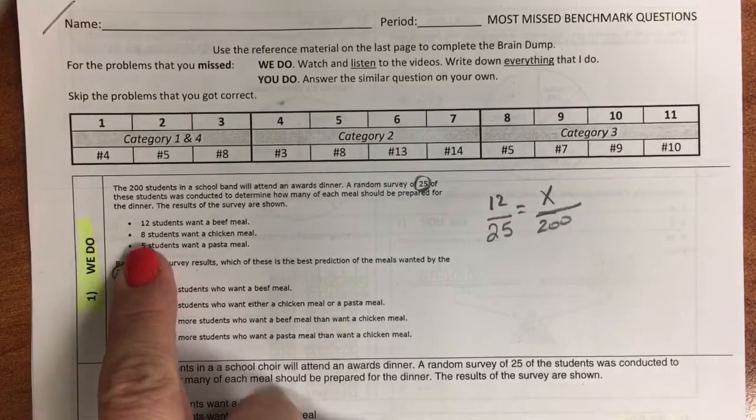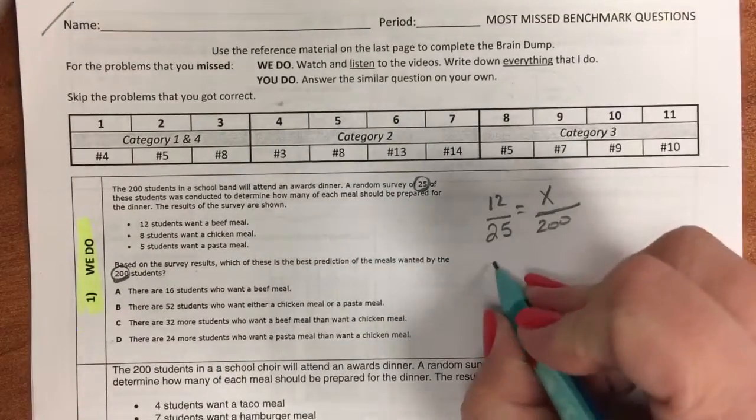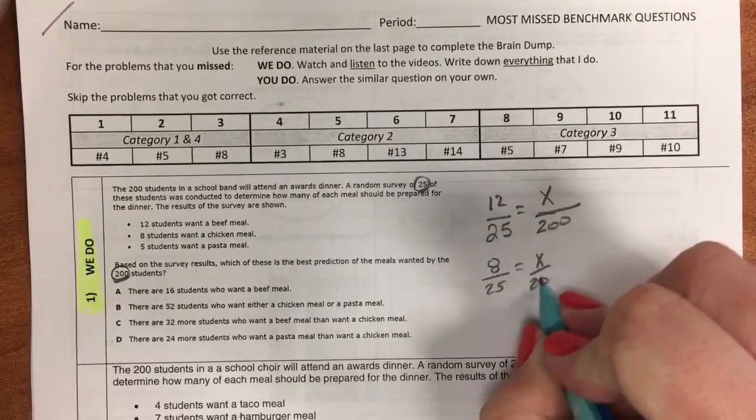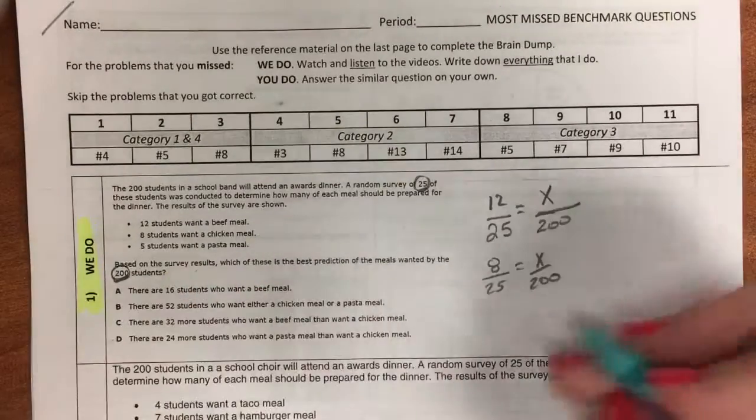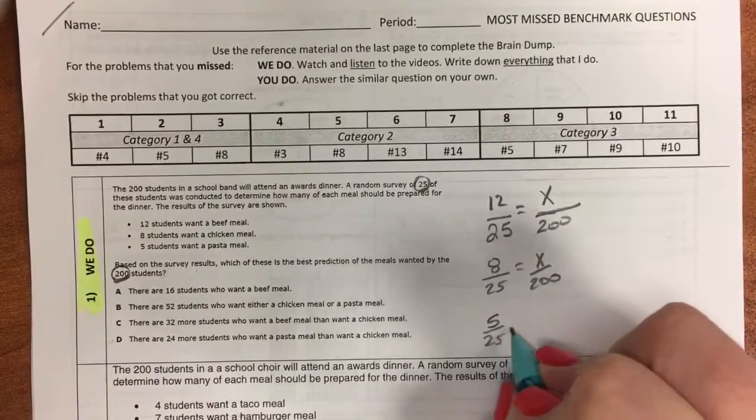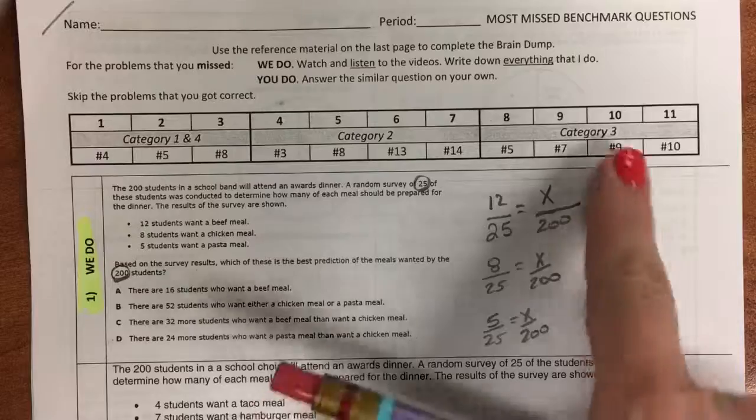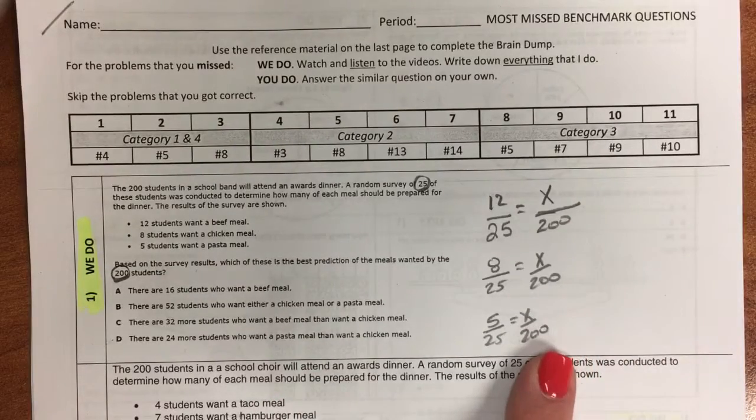We're going to have our x on top. And we're going to need to do this again with the 8. So we'll have 8 out of 25, and we'll do it again with the 5, and we'll have 5 out of 25. So here's our samples and here's the 200.